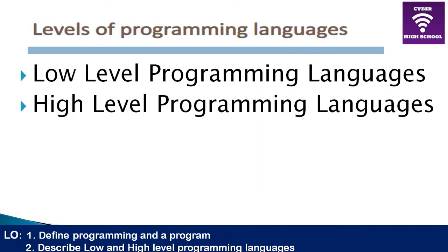There are two levels of programming languages. The first is known as the low-level programming language, and secondly we have the high-level programming languages. Low-level languages are programming languages which are closer to the language of the computer.